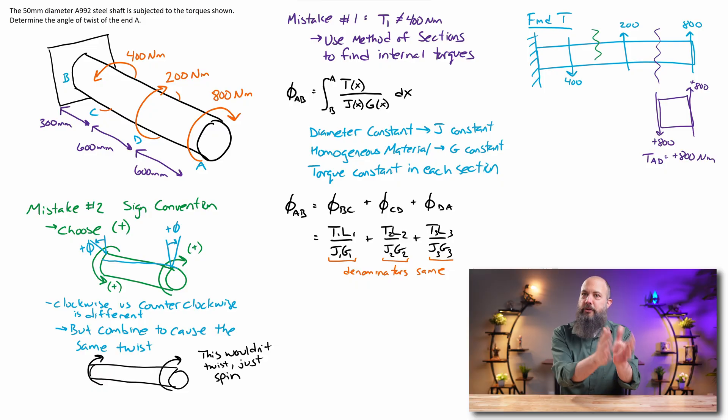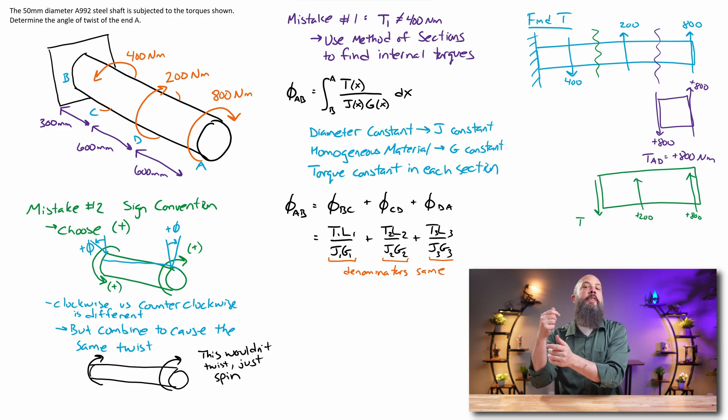For the middle section of the rod, we've got 800 and 200 both going in the same direction. So, my internal torque is 1,000 newton meters in the opposite direction, but still positive. Again, you can see why this mistake is so easy to make to mix up your signs for this type of problem.